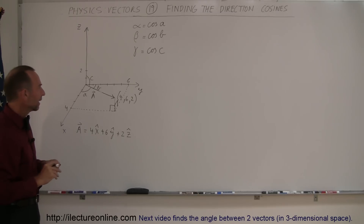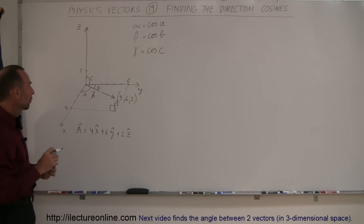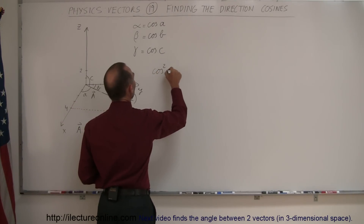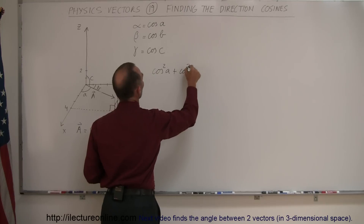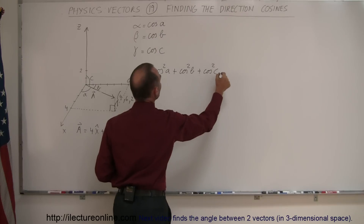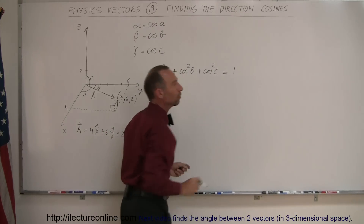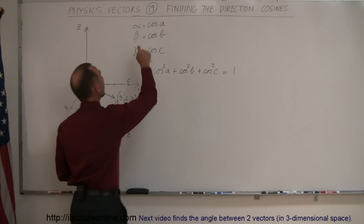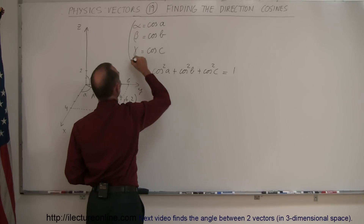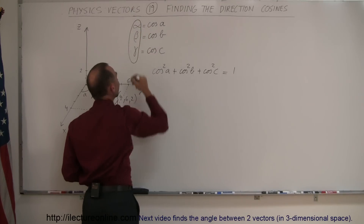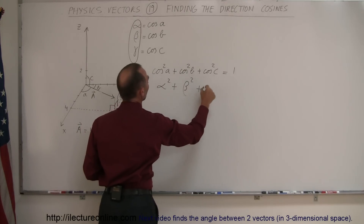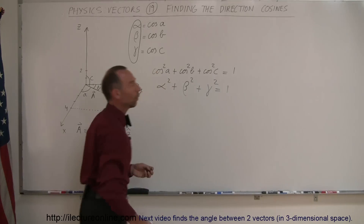It turns out that if you take the square of each of those direction cosines and add them together, you get 1. So, for example, cosine squared of A, plus cosine squared of B, plus cosine squared of C will always equal 1, no matter what your vector is. In other words, since the direction cosines are defined as alpha, beta, and gamma, we can say that alpha squared plus beta squared plus gamma squared also must equal 1.